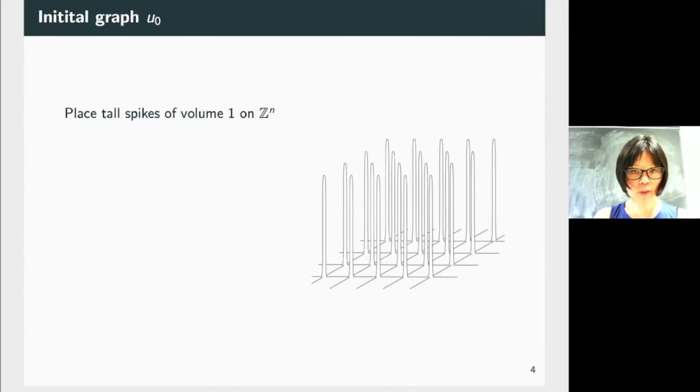The initial graph will look like the picture, and the picture is when n equals 2. We place tall spikes of volume 1 on the Z^n. By volume, I mean that the volume under each of the spikes you see is 1.